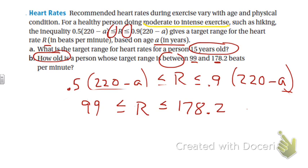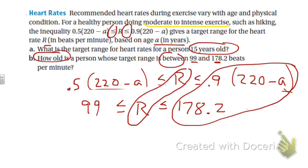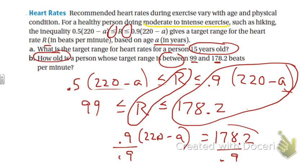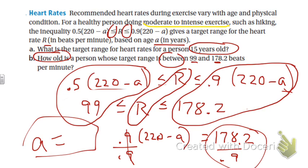So if you look at what is the same about our two inequalities, well we both have r in the middle, and out here we could set those things equal to each other. 0.9 times (220 minus a) equals 178.2, and you could solve that - divide by 0.9. I'm not going to do that without a calculator right now. That cancels out, move 220, and you could do the same thing here because this should be 99. Those should both give you the same value for a, and that's the age of the person.